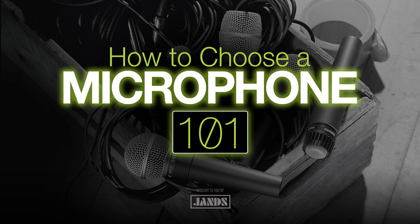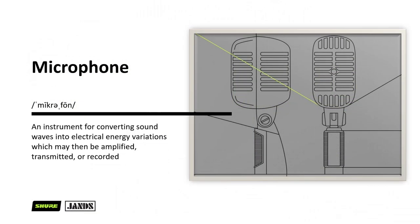First off — what is a microphone? A microphone is an instrument for converting sound waves into electrical energy variations which may then be amplified, transmitted, or recorded. It is a device that captures sound waves — air molecules compressing and expanding — and converts that to an electrical signal or voltage which can be read by mixers or recording devices. Another thing we can call it is a transducer, which takes one form of energy and changes it to another: taking sound pressure waves and converting that into an electrical signal.